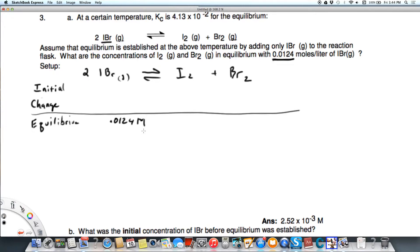Initially we know that I2 and Br2 are zero because it says we're only adding IBr. But we don't know what that is, so that's going to be the molarity initial.